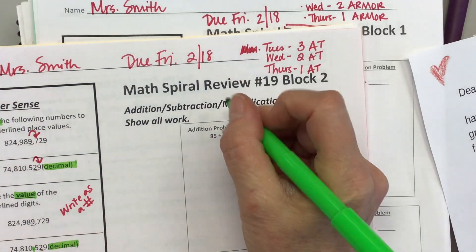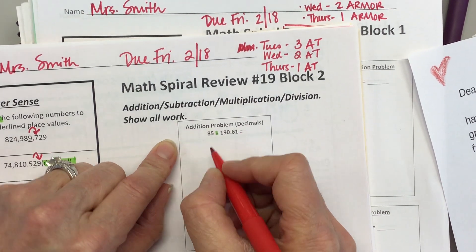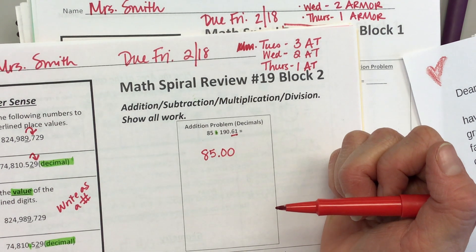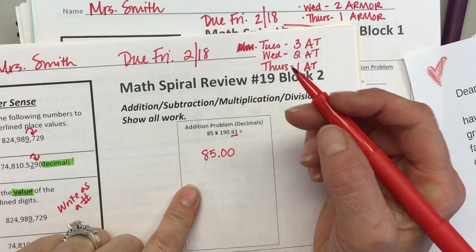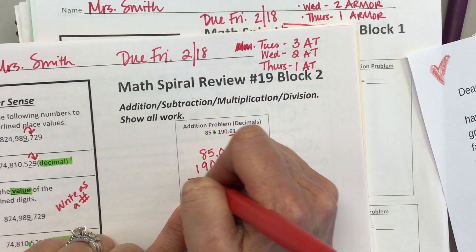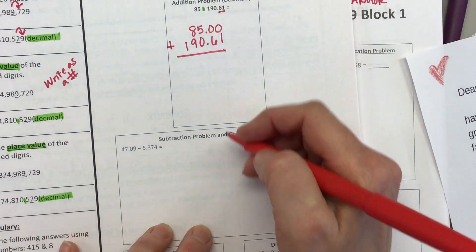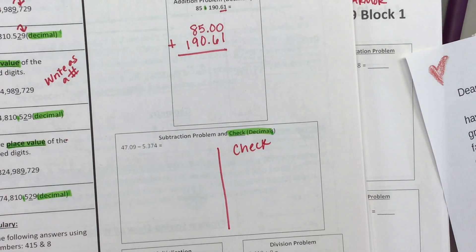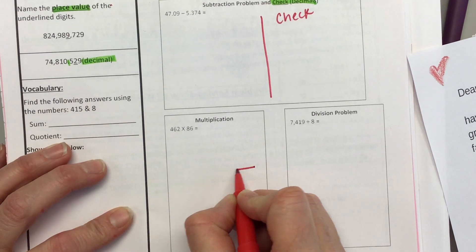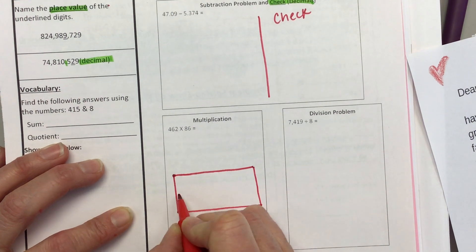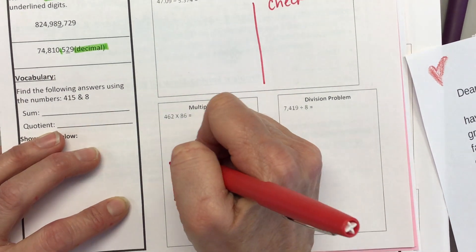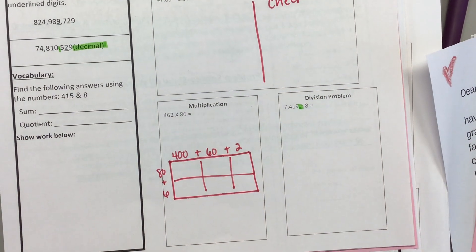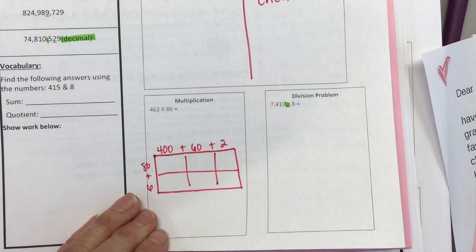Addition, subtraction, multiplication. This is an addition. You're going to want to write that number as 85 decimal point zero zero because this number to the right goes to the hundredths place. Please pay attention to what I'm doing. When you line that up, you always line up those decimal points. You need to make sure that you check your work. Draw a line here and put a check. You're going to add back to check. This is multiplication. You're going to want to set up a three by two box. And then this is division. The divisor just has one digit.